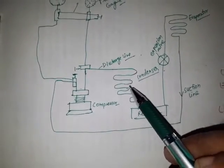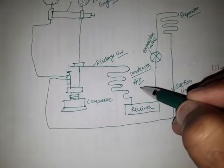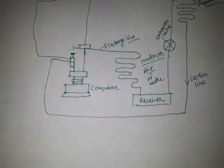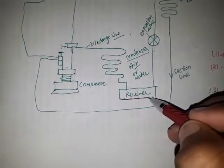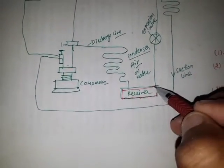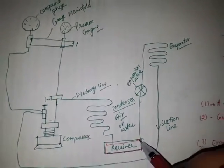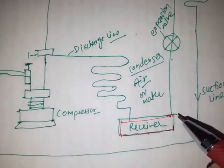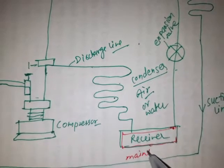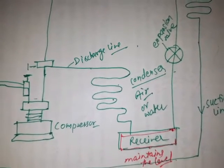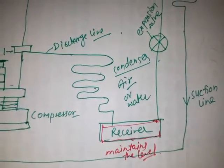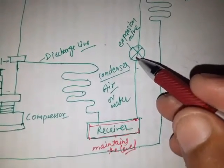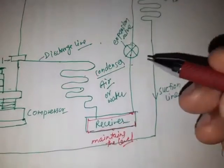The temperature is lowered with the help of a cooling medium, which may be air or water. The liquid refrigerant then flows towards the receiver tank, where it is stored. In the receiver tank, the liquid refrigerant maintains its level, and then flows towards the refrigerant control device through the liquid line.